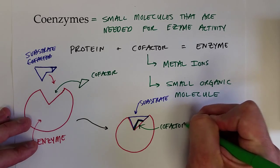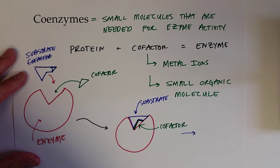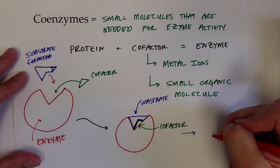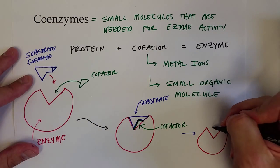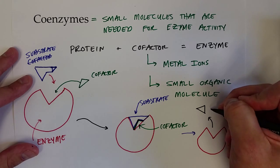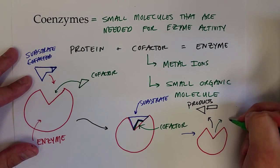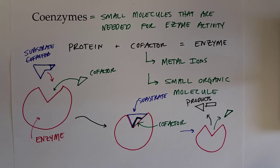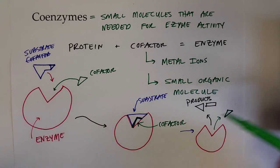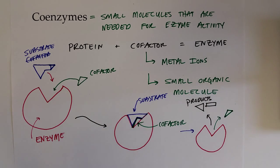If that coenzyme wasn't present in that particular area of the active site, this chemical reaction wouldn't have occurred. After this happens, the cofactor or coenzyme and the enzyme are unchanged, but the substrate has been converted into products. So the enzyme and the cofactor can continue on to catalyze chemical reactions. This is a requirement for some enzymes — whether the cofactor is a metal ion or a small organic molecule called a coenzyme — in order for the substrate to be converted into products.